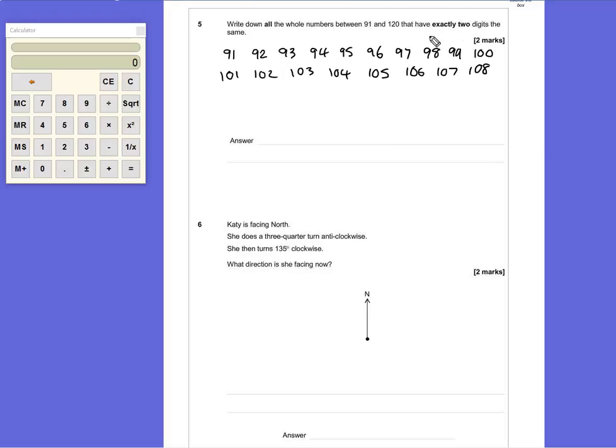It would be very common for people to remember 99, but slightly harder for people to remember 101 has two number ones in it.